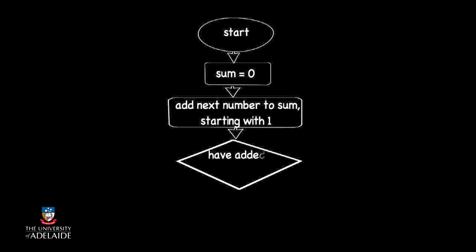We still have numbers to add, so we go back to that point in our flowchart and add the next number, in this case 2. We continue this process until we have added all of the numbers in our sequence from 1 to 5.